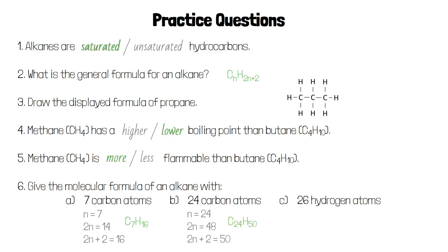For an alkane with 26 hydrogen atoms, 2N+2 is 26, so 2N is 2 less than that, which is 24, and N is half of that, which is 12. That means an alkane with 26 hydrogen atoms will have the molecular formula C12H26.